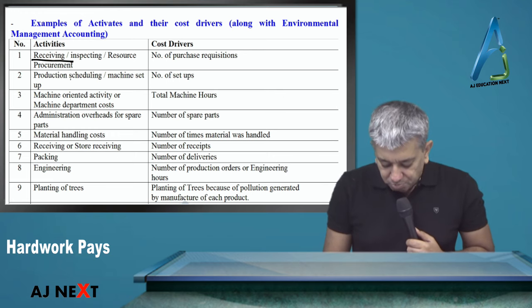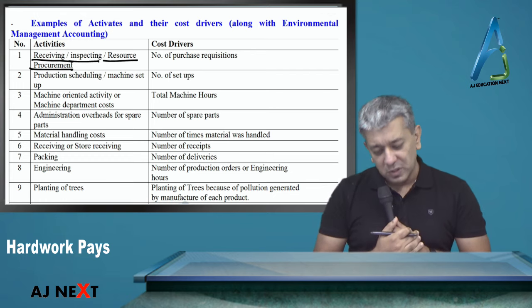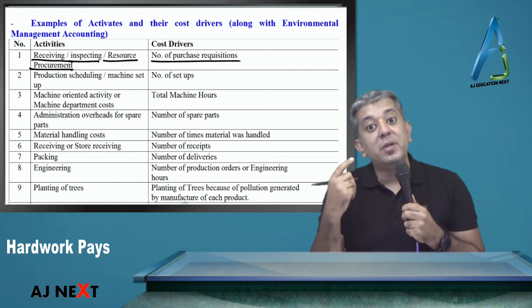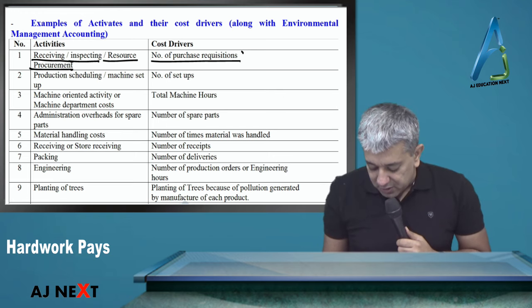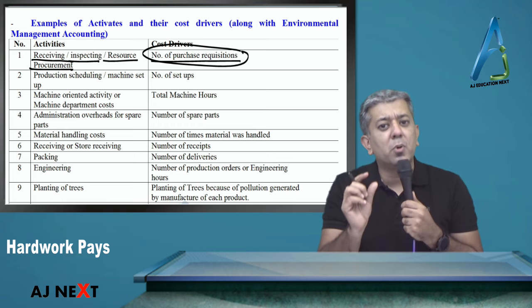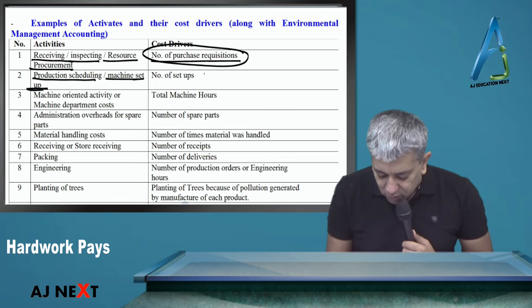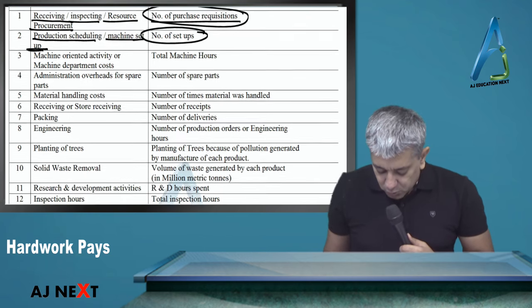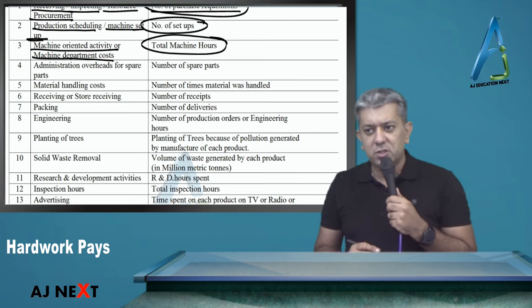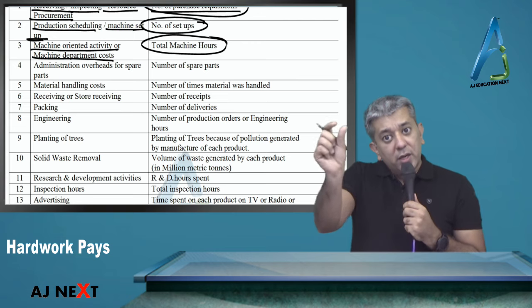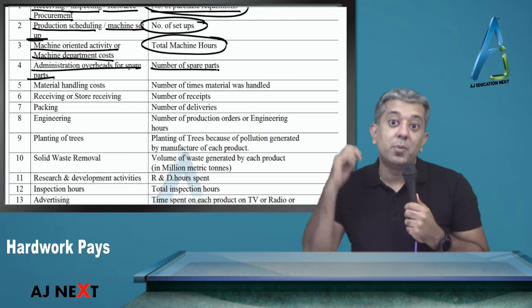Receiving cost, inspecting cost, resource procurement - you're buying raw material and inspecting it. Obviously divide that in the ratio of inspections. When will you inspect? When raw material comes. How many times will material come? That depends on how many times you ordered. Number of purchase requisitions, or number of orders for raw materials. Then production scheduling or machine setup cost will be divided in the ratio of number of setups.